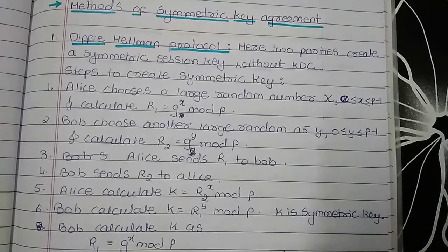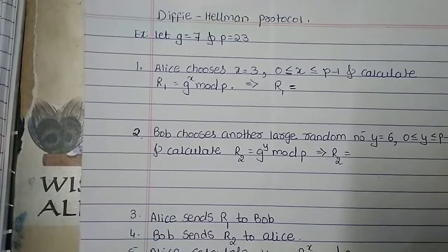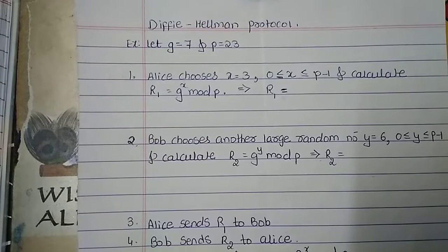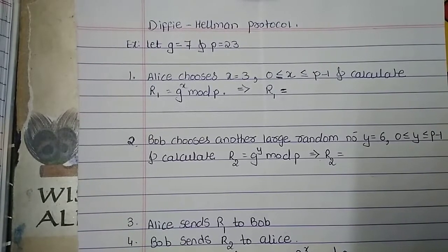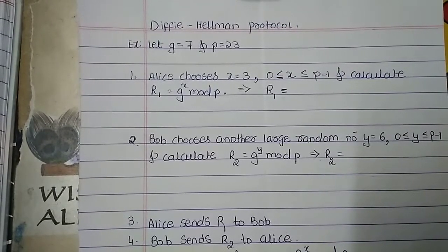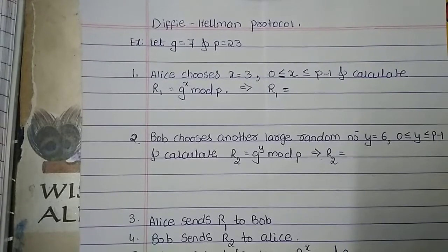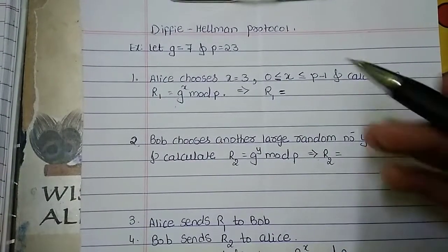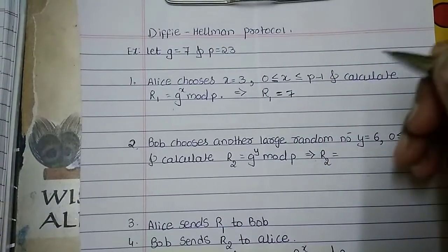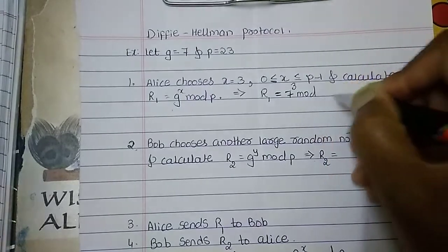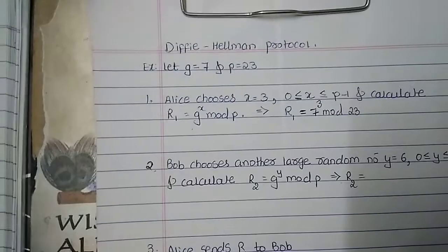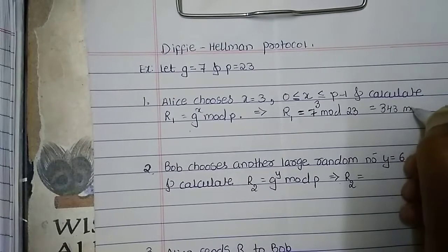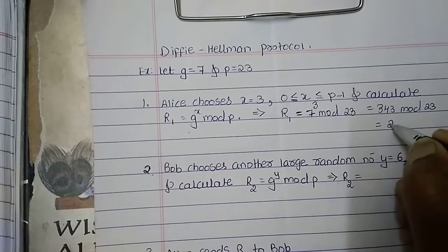Now let us see the same concept with the help of an example. Here I have assumed that the value of G equals 7 and the value of P equals 23. Alice is choosing the value of X as 3, which is greater than 0 and less than P-1 — P-1 is nothing but 23 minus 1, that is 22. Now we are supposed to calculate the value of R1 using the formula G to the power X mod P. So here G is 7, X is 3, mod P is 23. So 7 to the power 3 is nothing but 343 mod 23, which gives us the value of R1 as 21.